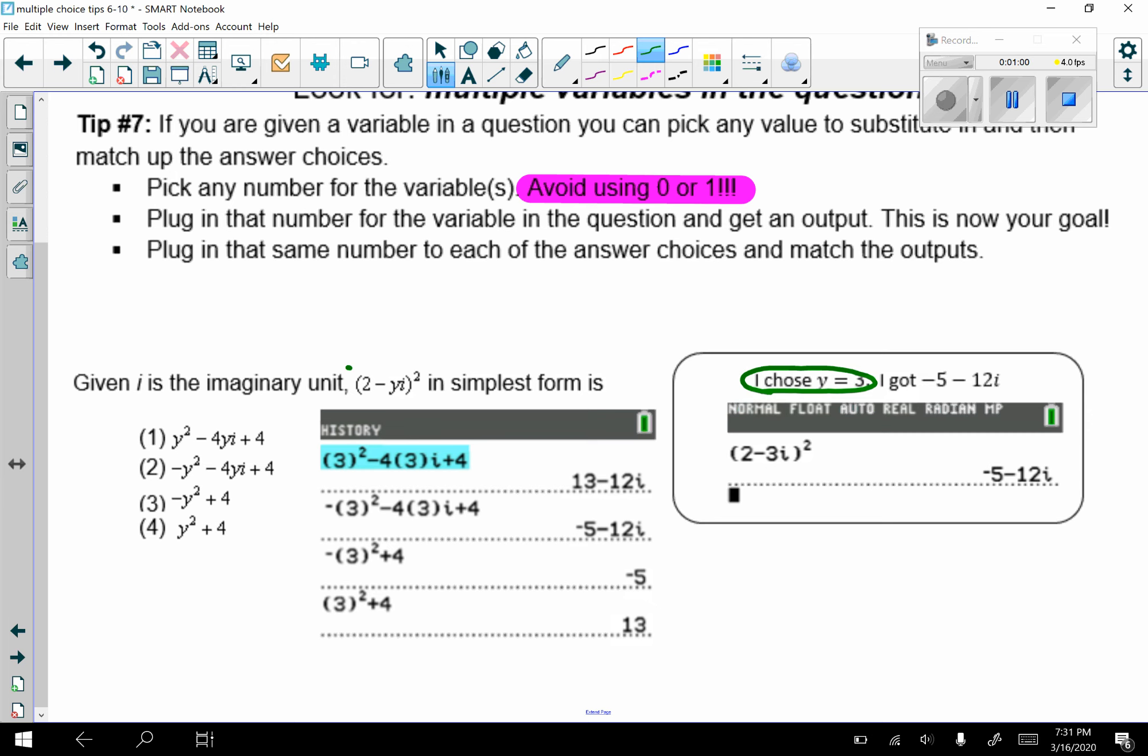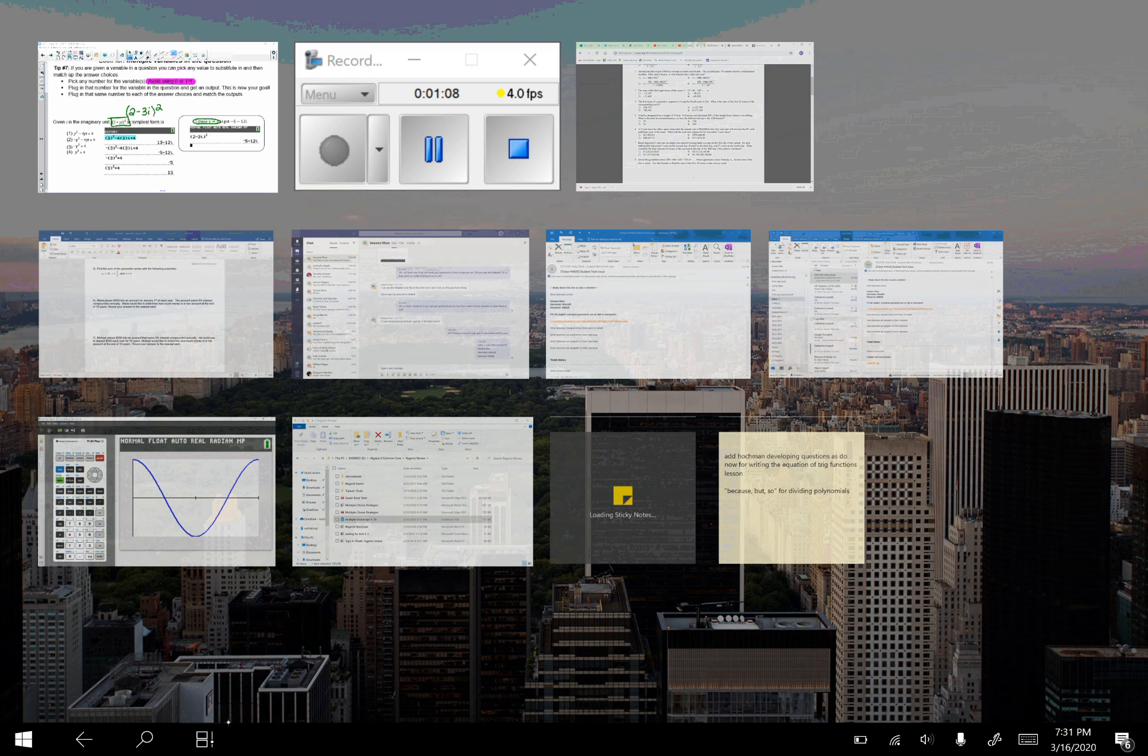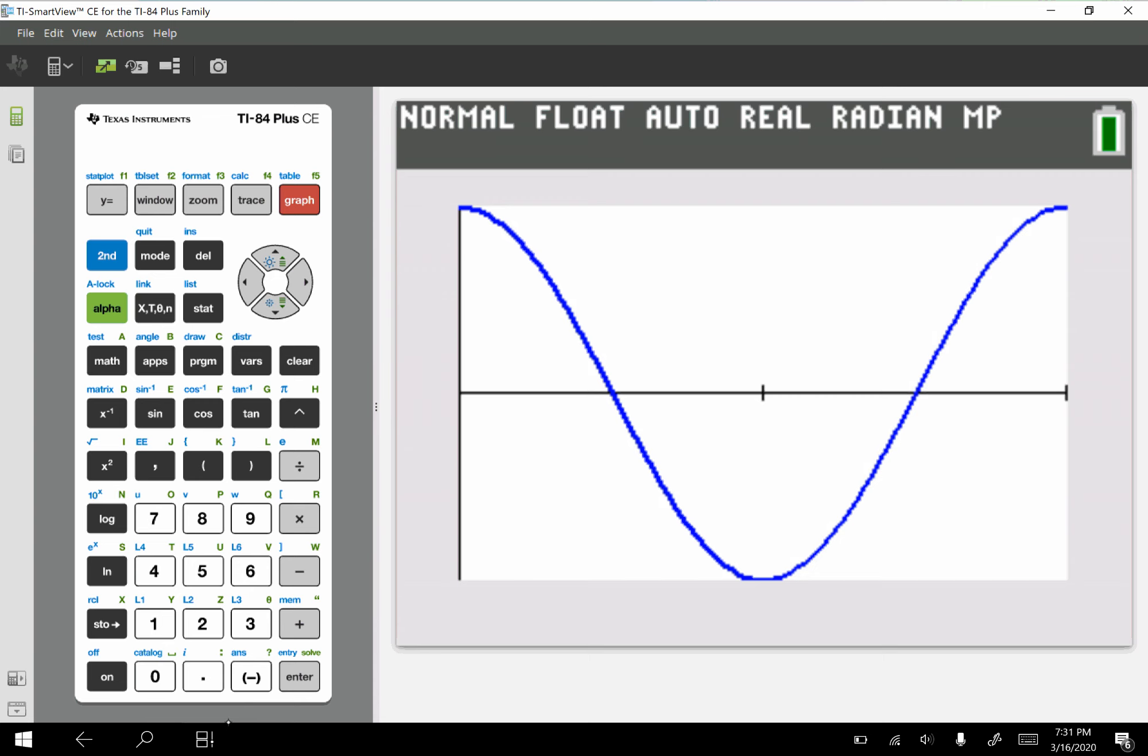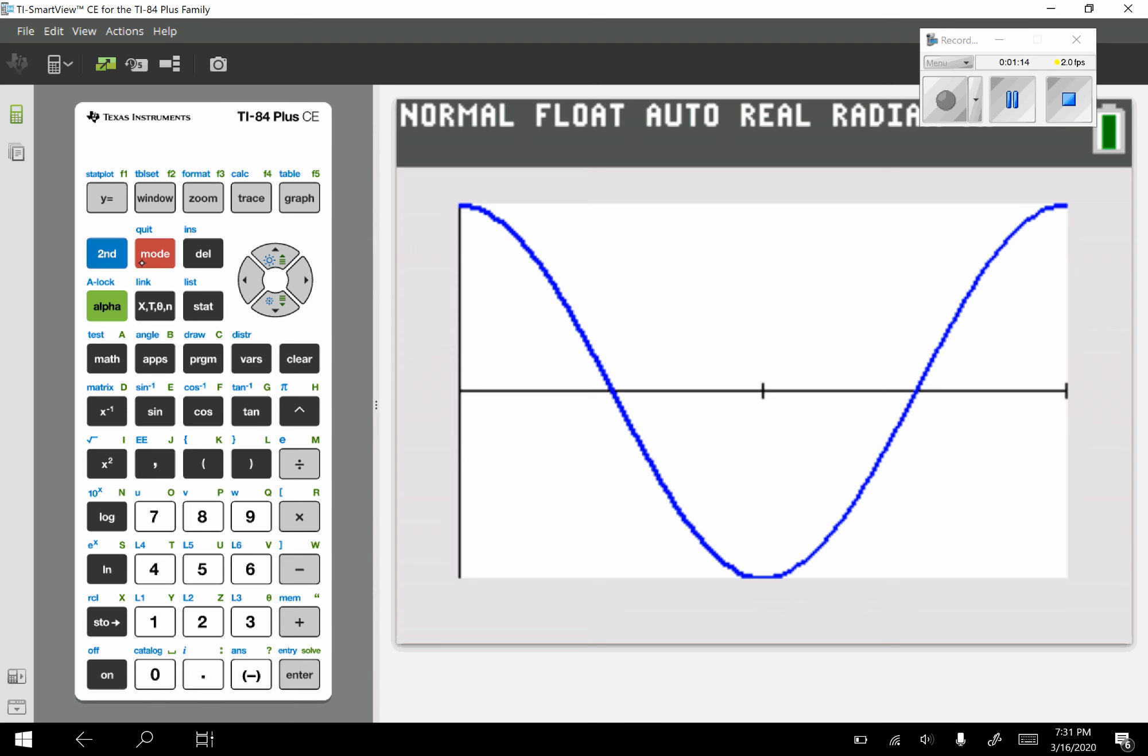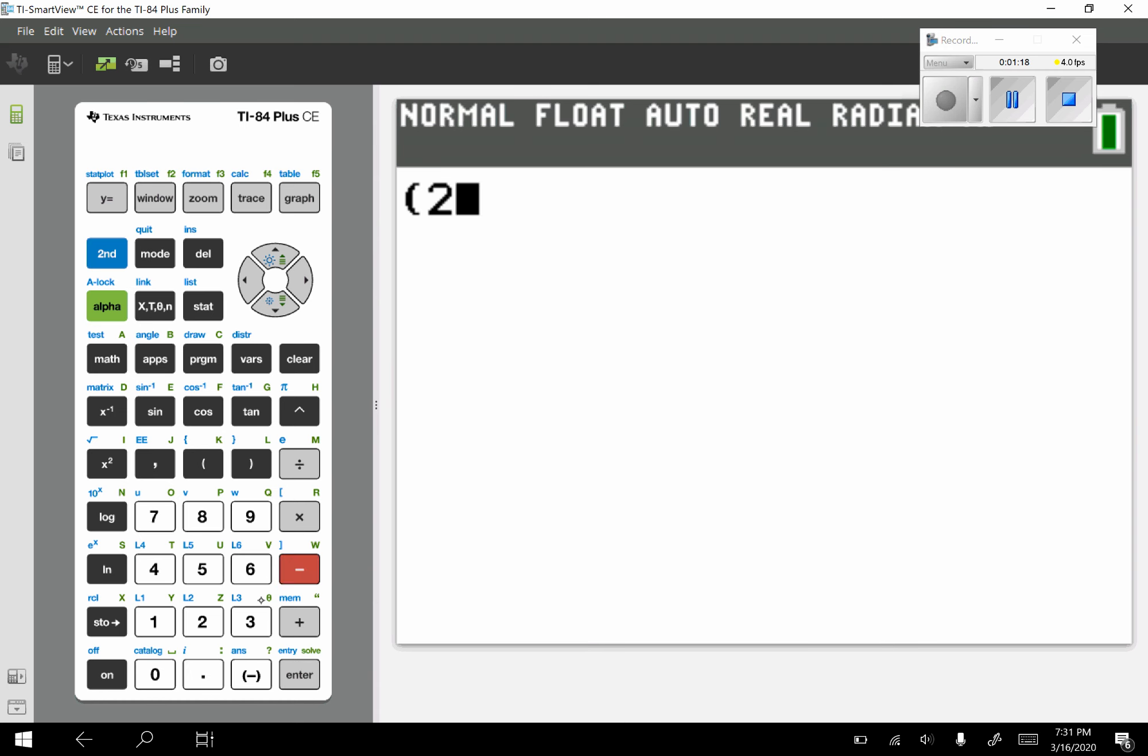What I did was I took my original question, (2 - 3i)², and you're going to go to your calculator in the home screen. In my home screen, 2 minus 3 second decimal point squared, and I got -5 - 12i.